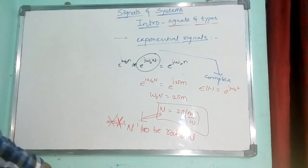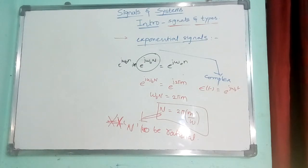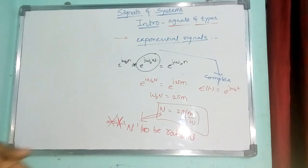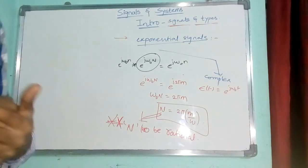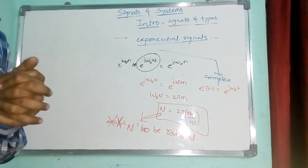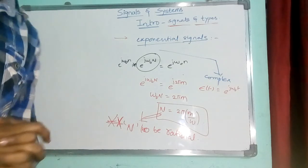These are the classifications and different types of signals which we mainly use in signals and systems and related concepts. In the next video, we will deal with systems and their properties. That's all for this video — thank you.